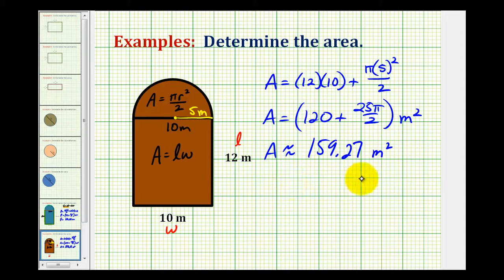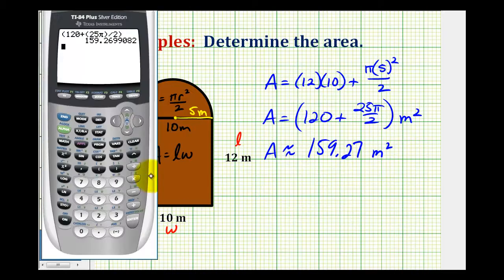Now I mentioned this in several of the previous videos, but it is worth mentioning again, a lot of times you're asked to use either 22 sevenths or 3.14 for pi. So if we use an approximate value for pi instead of the pi key, it is going to affect the accuracy of this area. Let's go ahead and try using 3.14 and see how it's different.